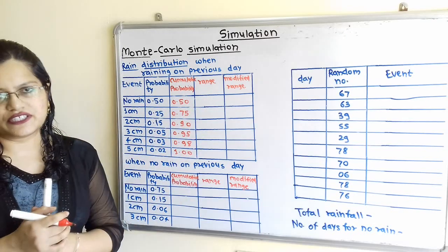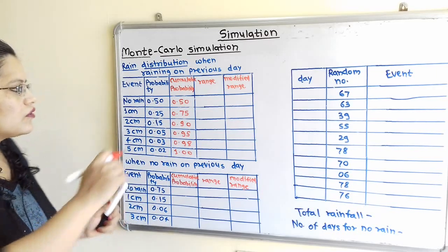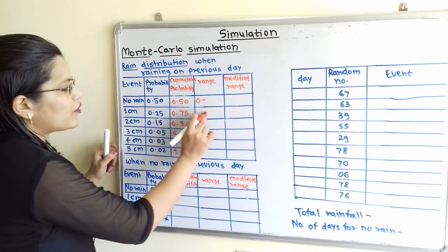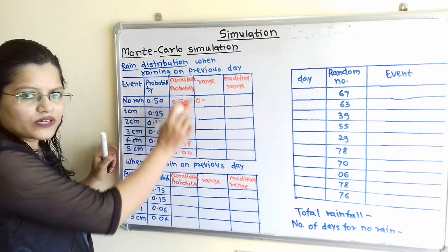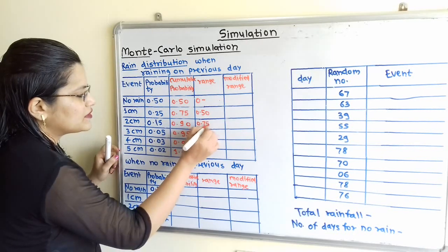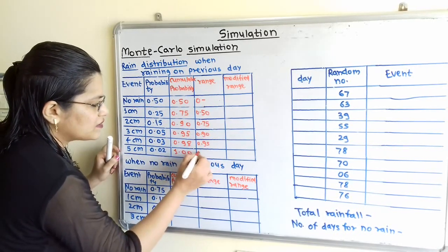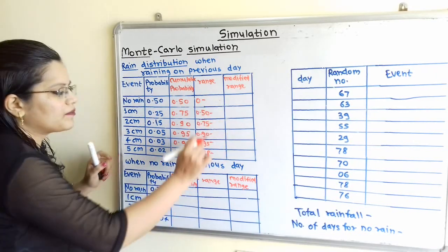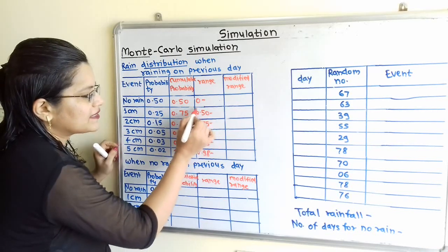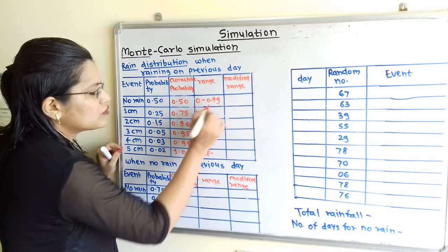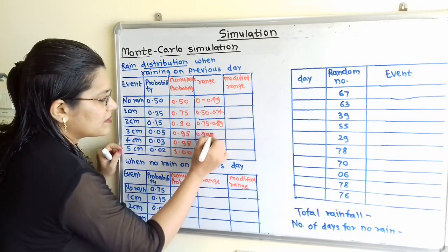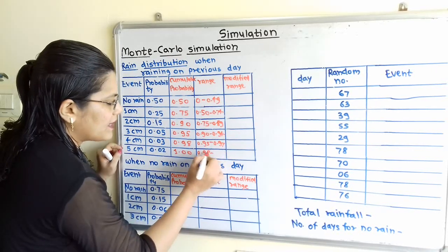Now we will decide the range. We have to refer the previous column — the range is always between two numbers. For the first row, the range starts from 0. For the second row, we refer the previous column and write 0.50. In the same way for the third row, I will write 0.75, then 0.90, 0.95, and 0.98. For the second number of each range, we take one number less than the starting number of the next row: 0.49, 0.74, 0.89, 0.94, 0.97, and the last is 1.